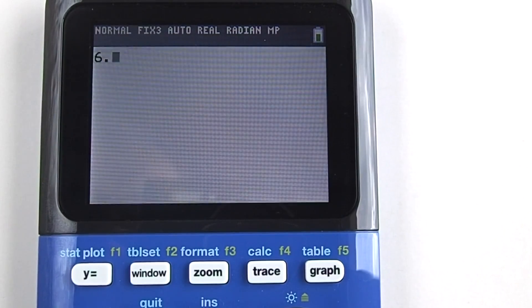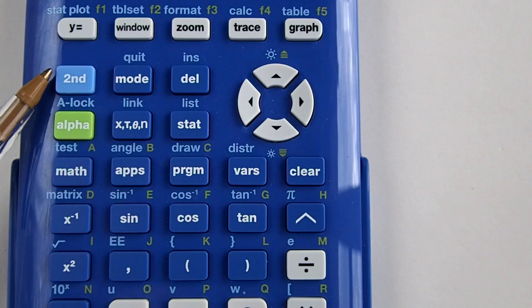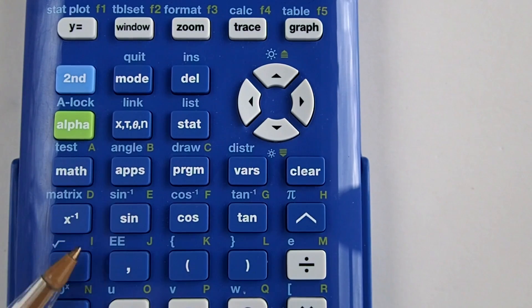To begin, enter 6.02214, then press the second key here, then the comma key.